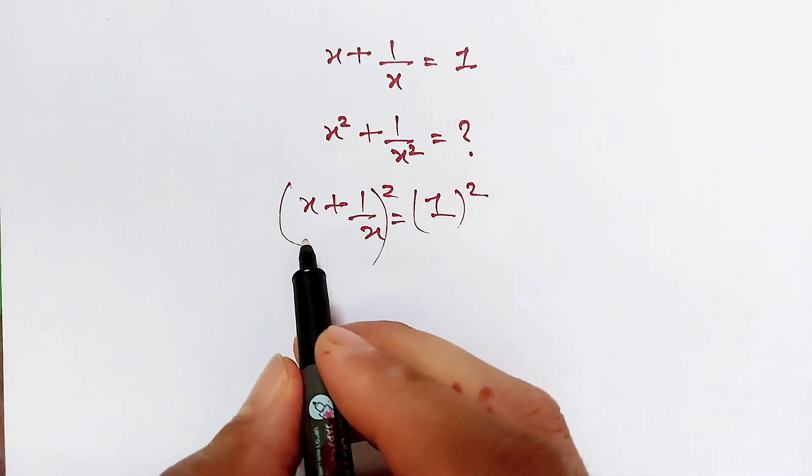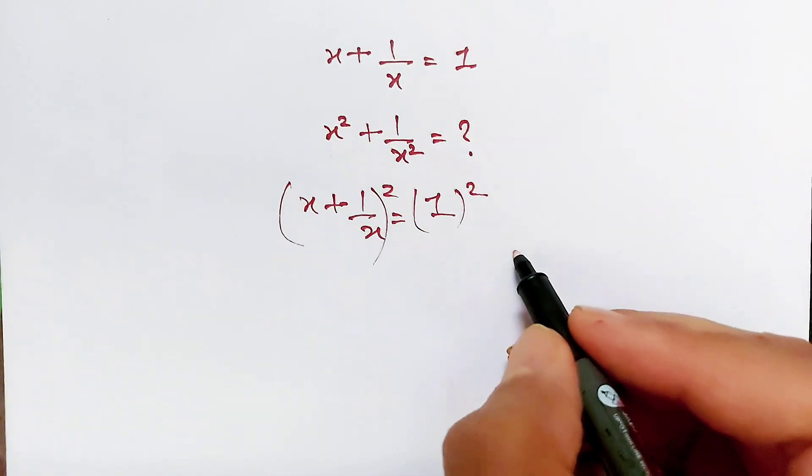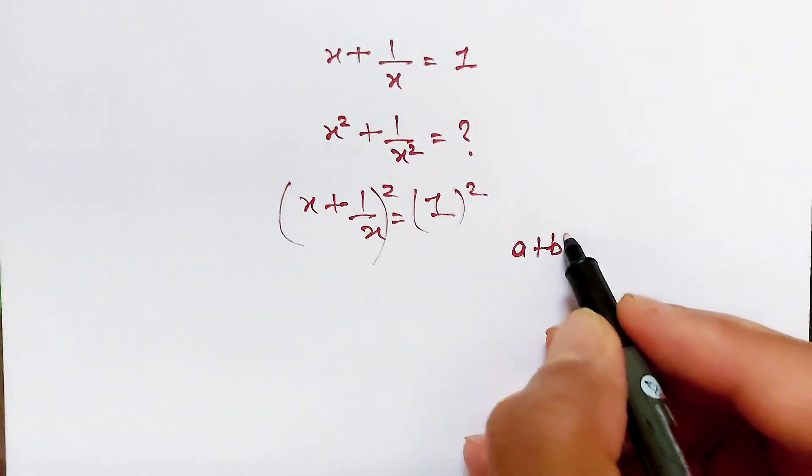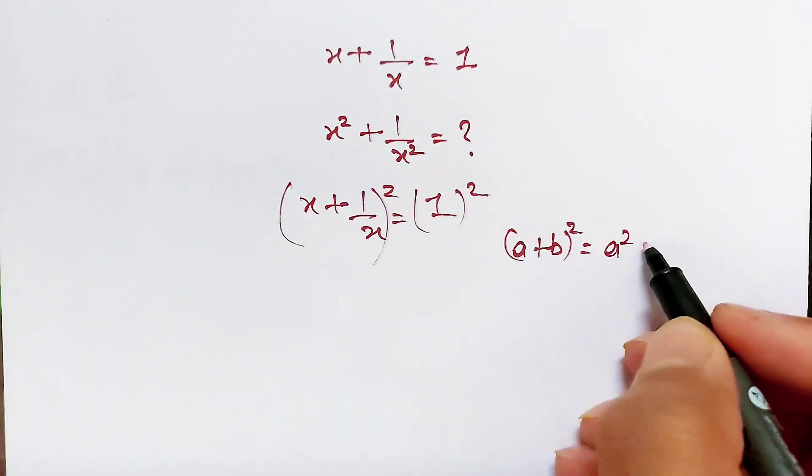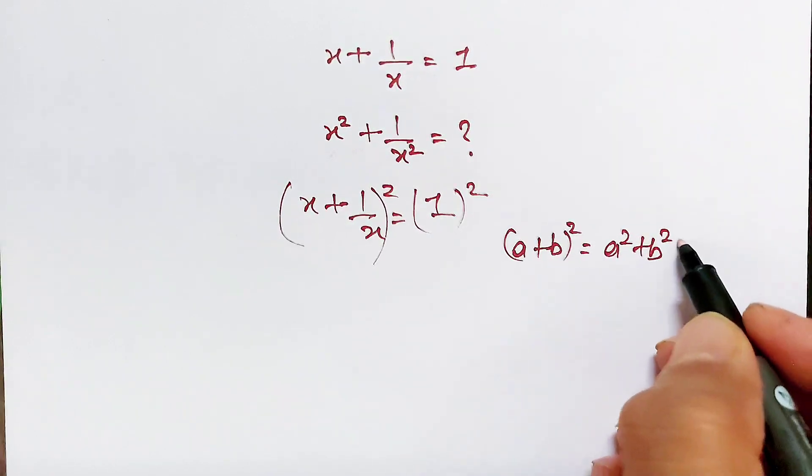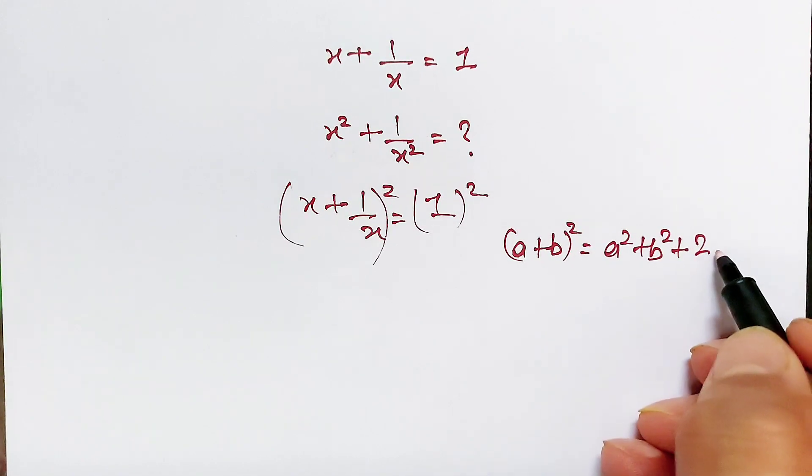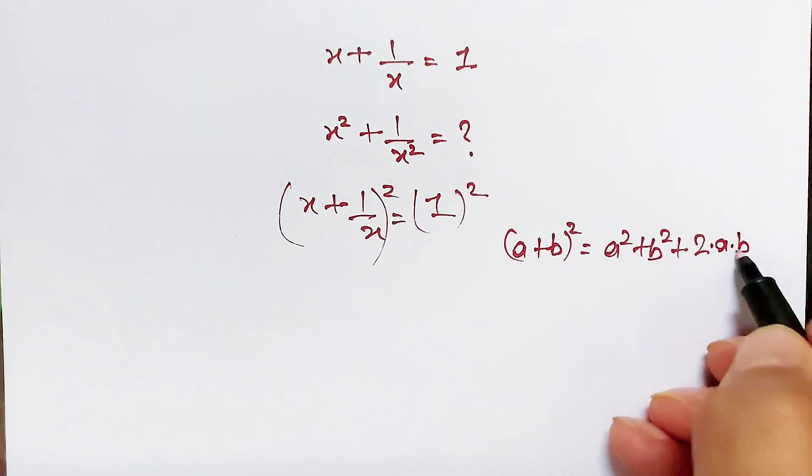Now here we are applying the algebraic formula (a plus b) whole square, which is equal to a square plus b square plus 2 times a times b.